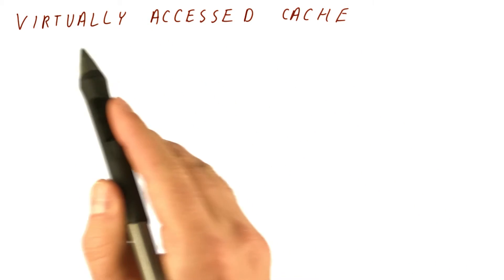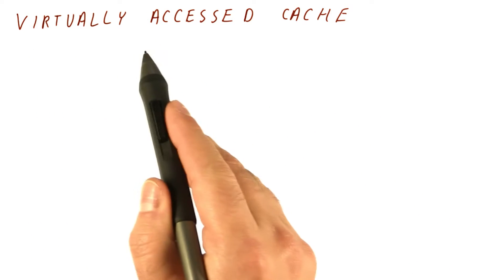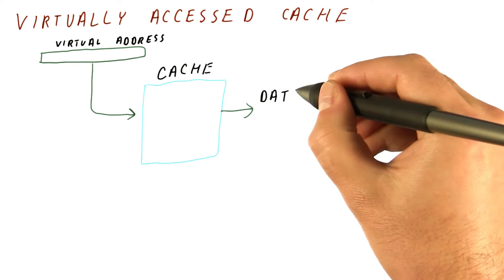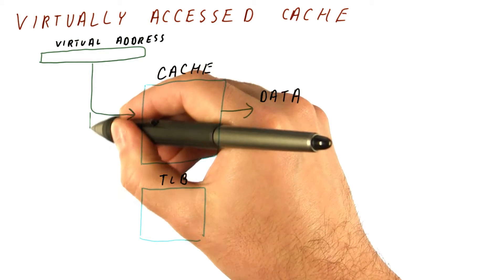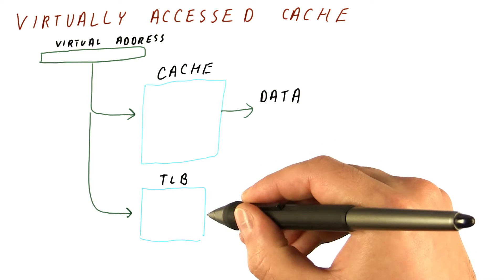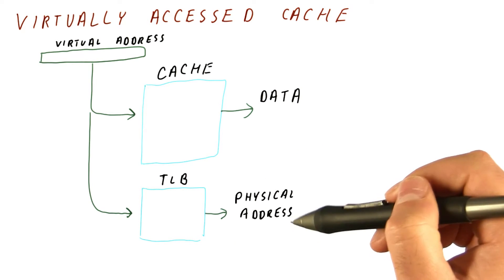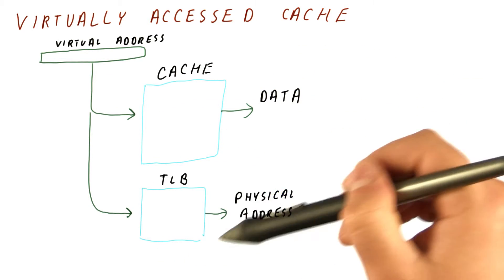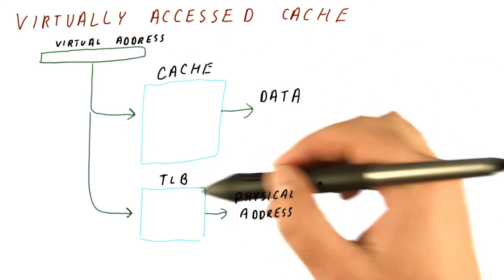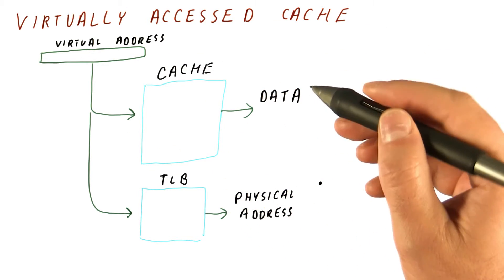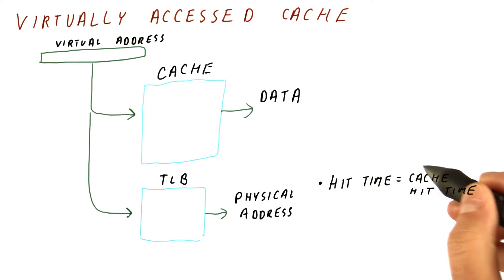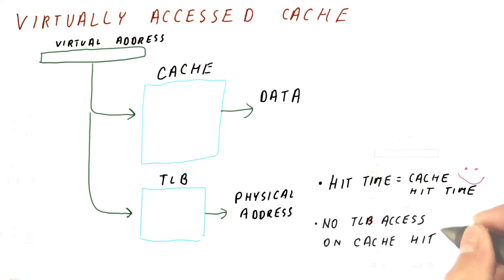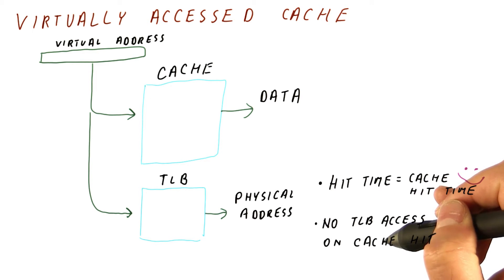We can improve the overall hit latency of the cache using a virtually accessed cache. In that case, the virtual address is what we use to access the cache and get the data. On a cache miss, we use the virtual address to find the physical address so that we can bring data into our cache. But on cache hits, we can get the data without doing the TLB access at all, so the hit time is just the cache hit time with no TLB latency added. We also don't need the TLB access on cache hits, so we can save energy.